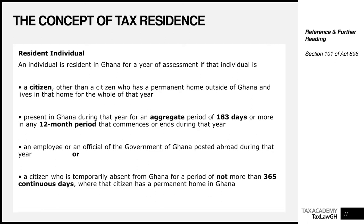When we say tax residence, it is tax residence for a person. So we have the concept of a resident person. As discussed in the first video, a person could mean either an individual or an entity. So when we say tax residence, we could have a resident individual, a resident company, a resident partnership, and a resident trust.